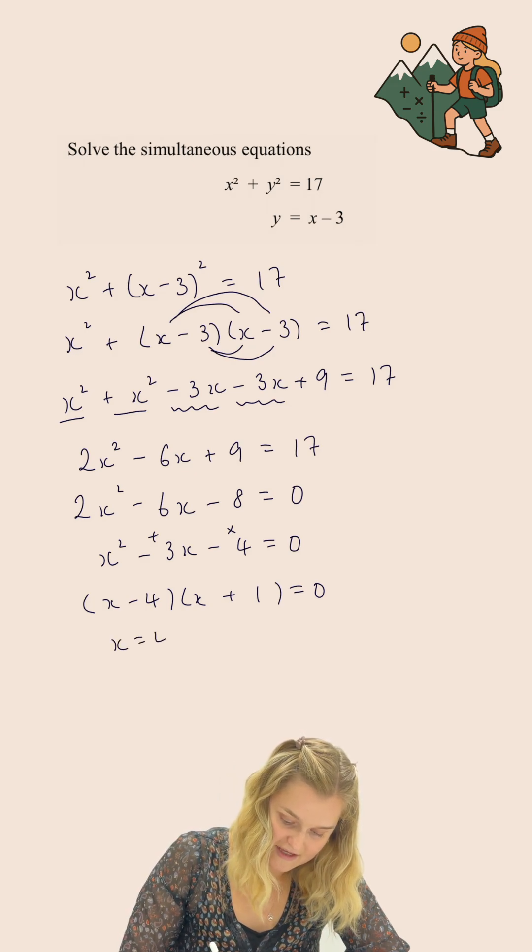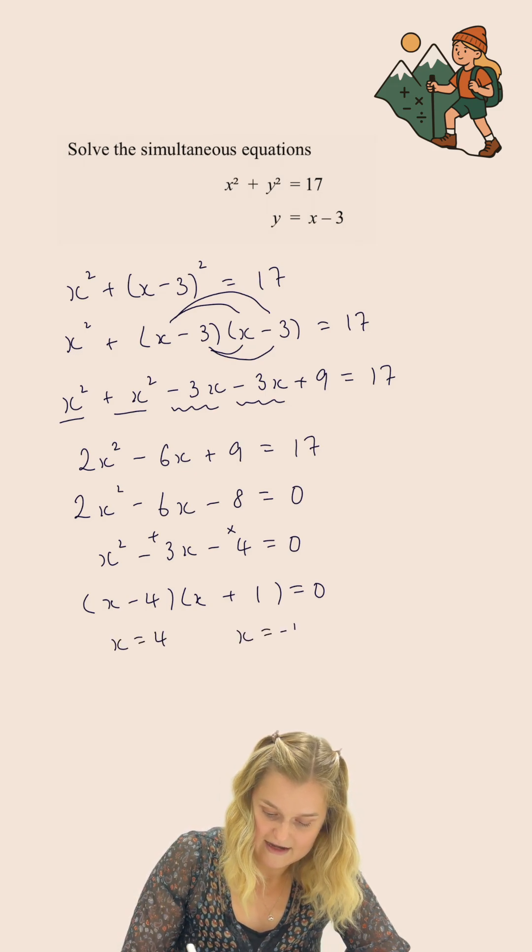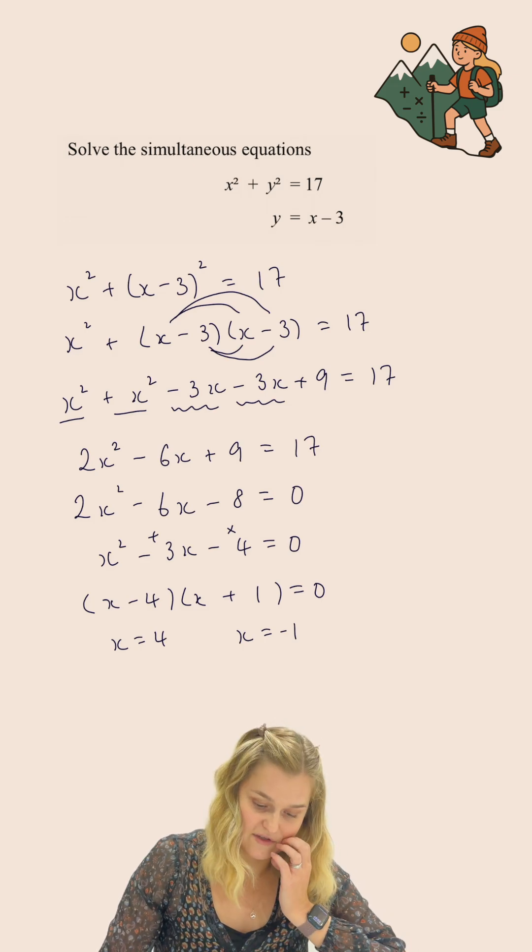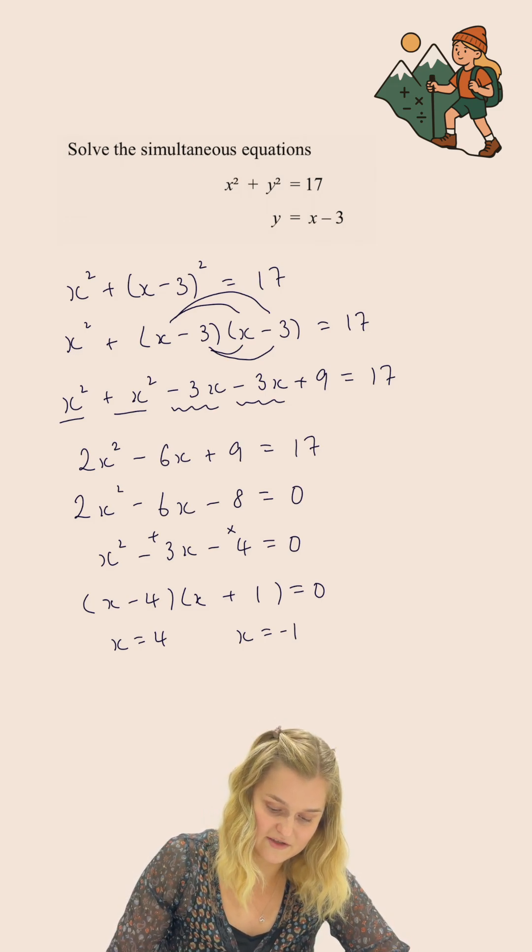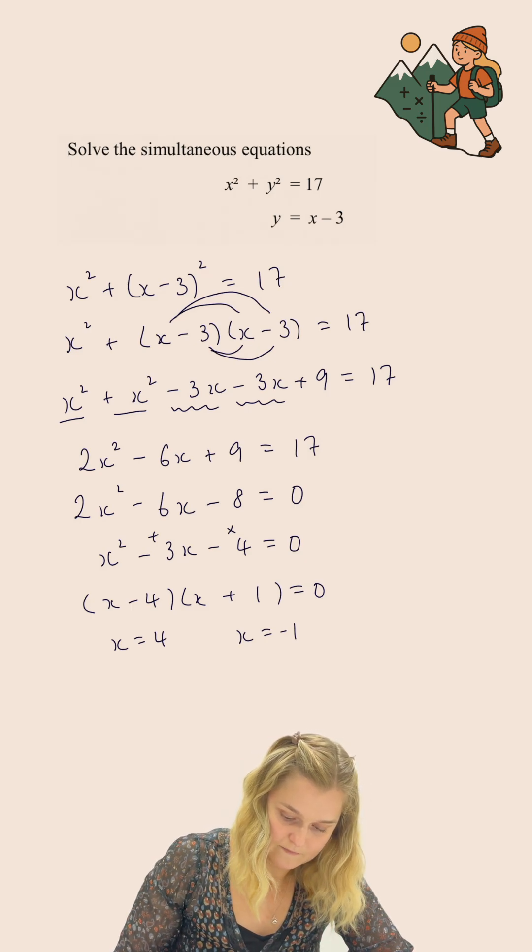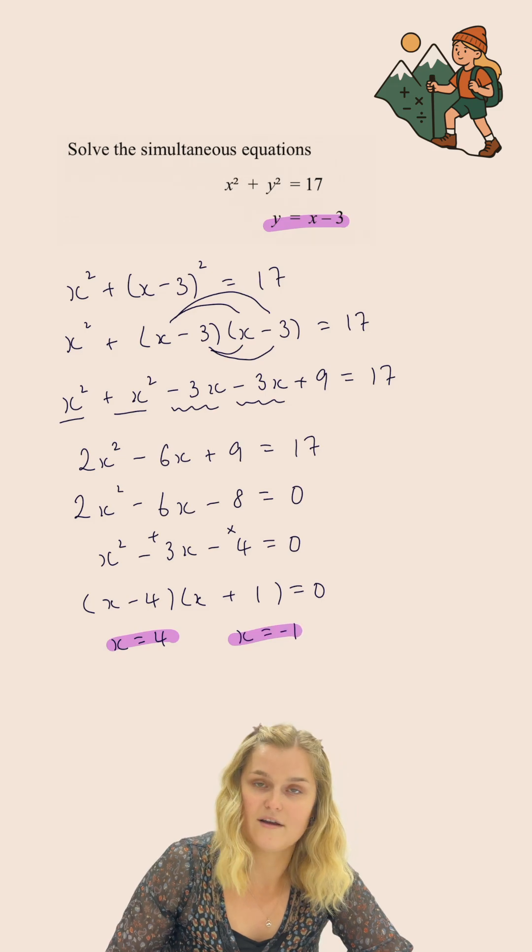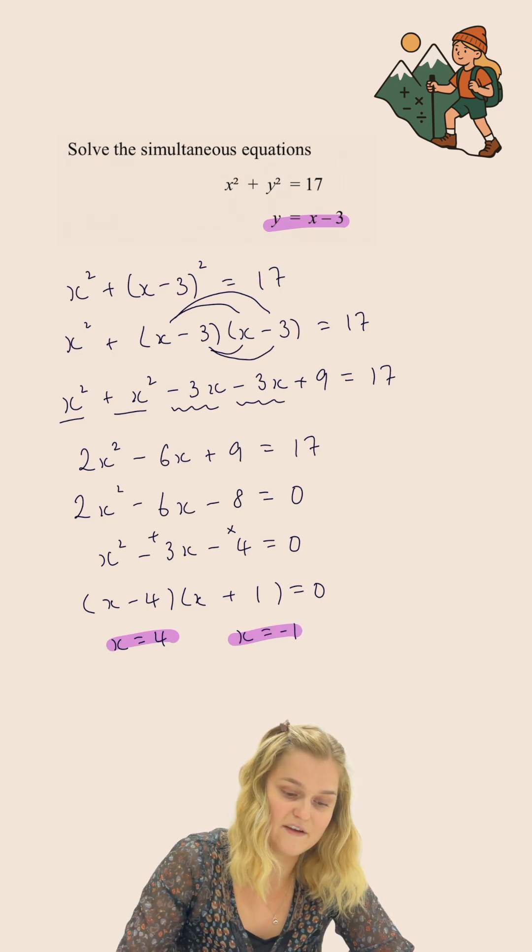My two solutions for x from this are x equals 4 and x equals negative 1. But I also need to know the solutions for y. So the final thing I'm going to do is substitute x equals 4 into this equation and x equals negative 1 into that same equation to figure out y.